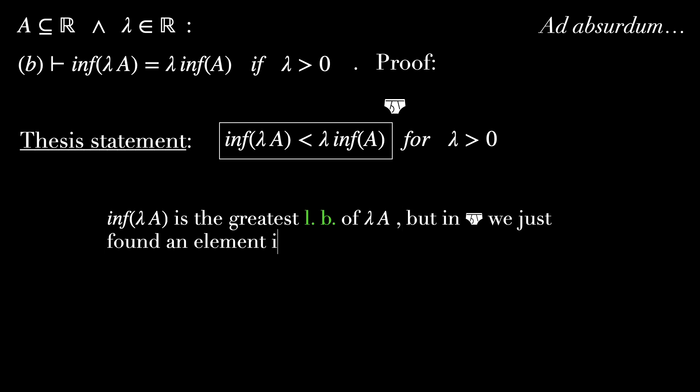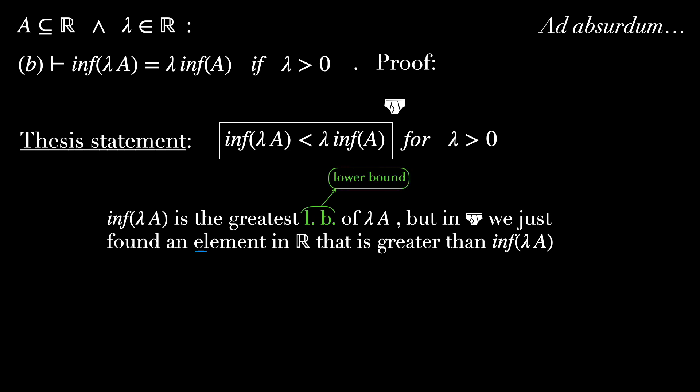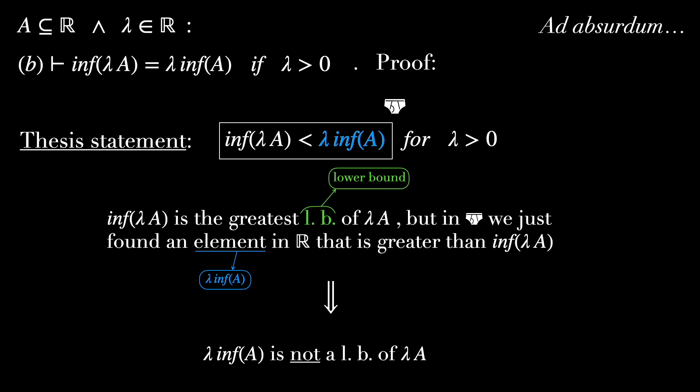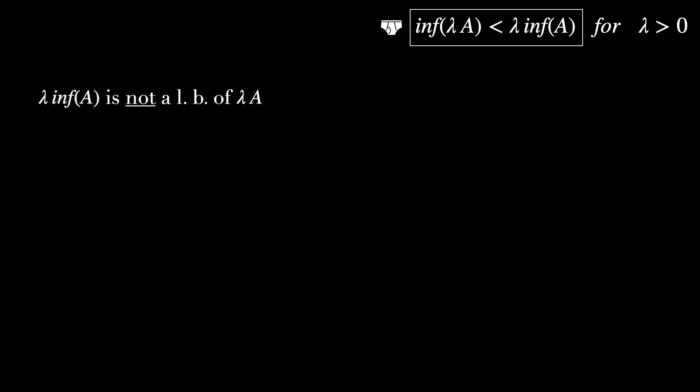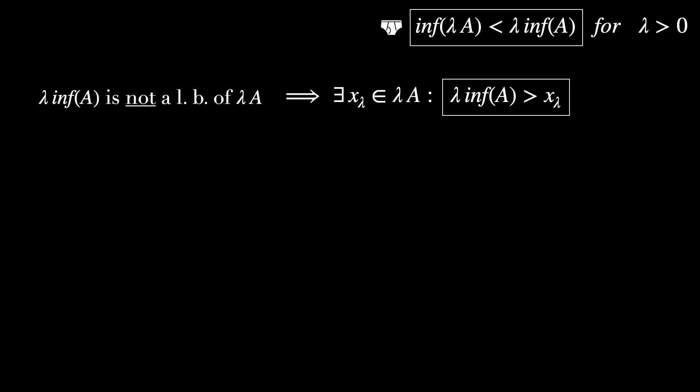By definition, the infimum of lambda A is the greatest lower bound of lambda A. But in the underwear inequality, we just found a real number — lambda infimum of A — that is greater than the infimum of lambda A. Since the infimum is the greatest of all lower bounds, lambda infimum of A cannot be one of the lower bounds of lambda A. Thus there exists an element x_lambda in lambda A such that lambda infimum of A is greater than x_lambda.